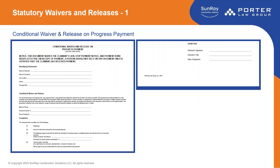Here is the 'Conditional Waiver and Release on Progress Payment' form. The form will include: the name of the claimant — that's you — the name of the customer, the job location described by address, and who the owner is. Then the through date, which is important because it means you are giving up all your claims for all work and materials supplied through that date. The language waives all claims conditionally for everything you've delivered and all work done to that date.